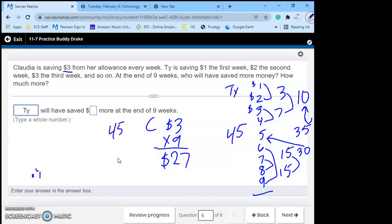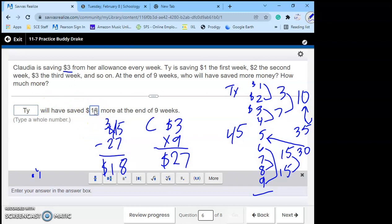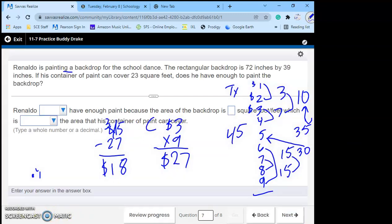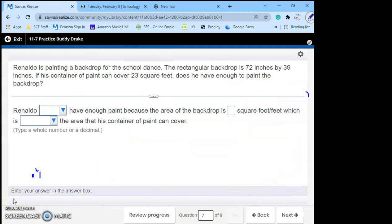And how much more did he save? Well, 45 minus 27. Regroup. 15 minus seven is eight. Three minus two is one. $18.